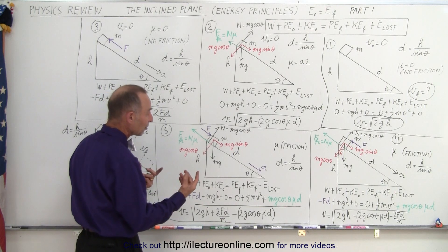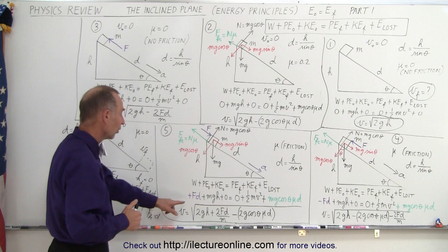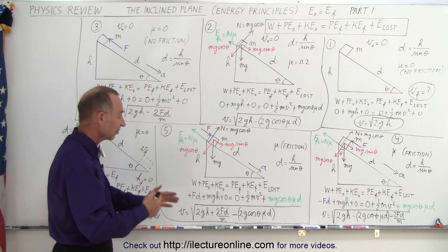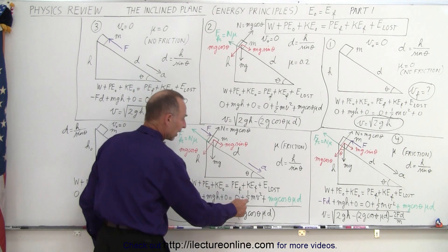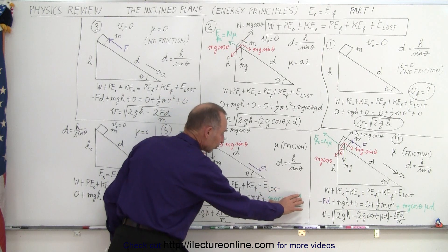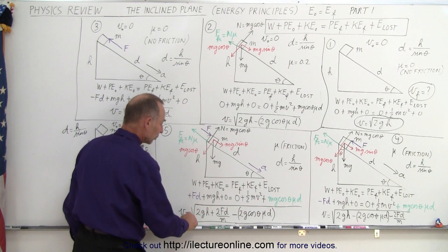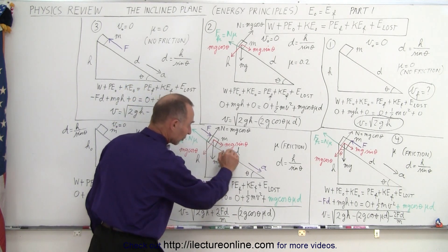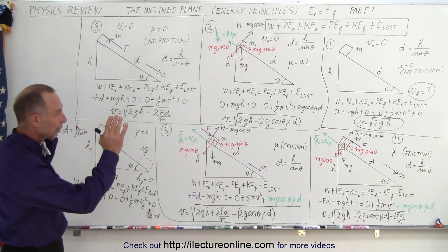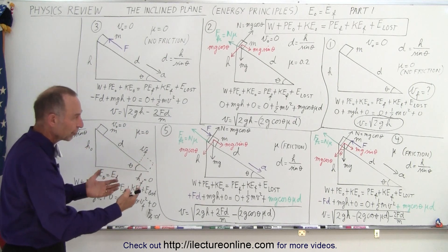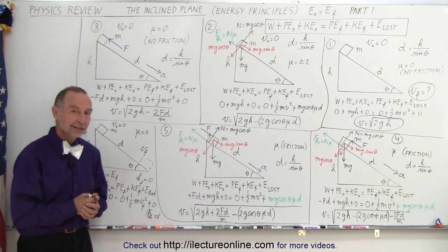In example five, we now push in the same direction as the acceleration, so we do add energy to the system. The work term becomes a positive f times d, because the displacement and the force are in the same direction. We still have initial potential energy mgh, final kinetic energy one-half mv squared, and energy lost to friction: mg cosine theta times mu, times distance d. When you solve for velocity, it equals the square root of 2gh plus additional velocity due to the force acting in the same direction, minus velocity lost to overcoming friction. These five examples show how the energy equation is applied to an object sliding down an incline with various combinations of friction and applied force.